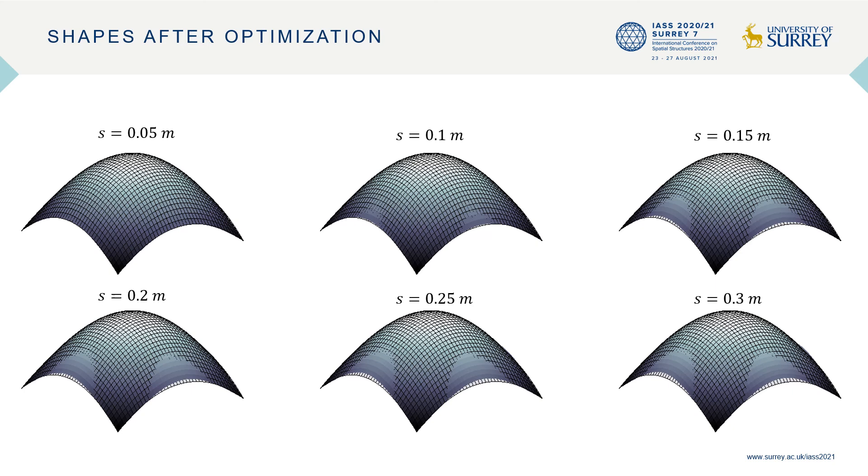These are some of the shapes obtained after the optimization of shells with different values of thickness s, subject to self-weight. The black-edged surfaces represent the initial shapes.